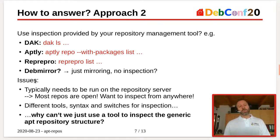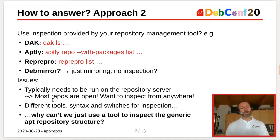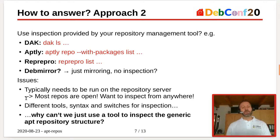But if I think about it, in all these cases I have to be on the repository server itself. But why? Most of my repositories are open for everyone, and I just want to inspect them — not only on the server, but from anywhere. I would also have to know different syntaxes and switches for each tool. So my question is: why couldn't we just use the generic repository structure and work on that for inspecting our many repositories?